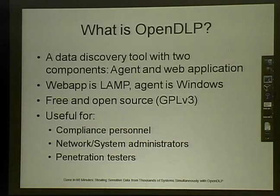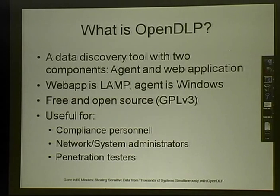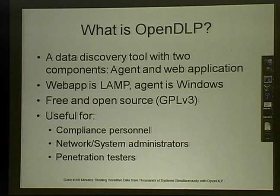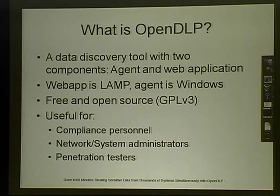OpenDLP is a data discovery tool with two components: a web app and an agent. The web app controls the agents and runs on the LAMP stack — Linux, Apache, MySQL, and Perl. The agent only runs on Windows right now. It's released under GPL version 3, so it's free and open source. It's most useful for compliance personnel, like PCI guys, who want to see what systems in their environment have PAN data.